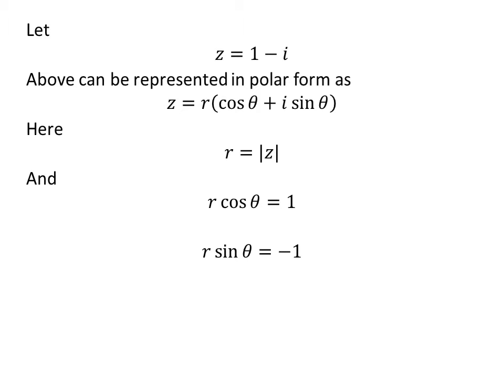Here, r is equal to the modulus of z, and r times cosine of theta equals 1, and r times sine of theta equals minus 1.